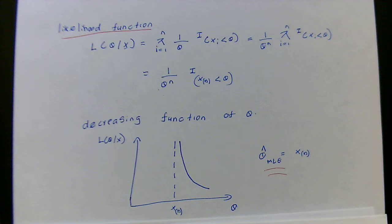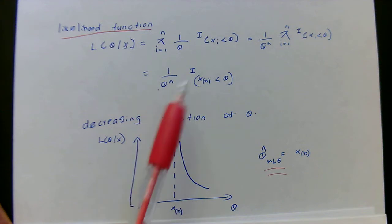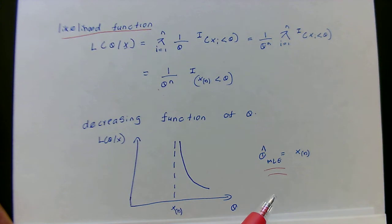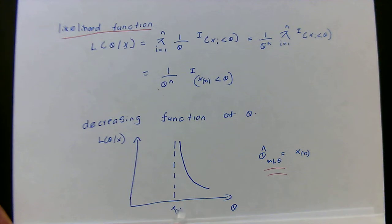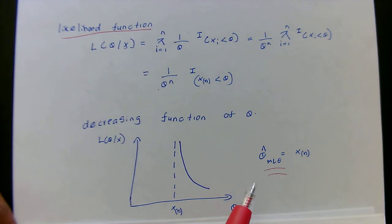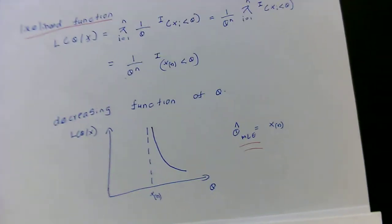If you draw this likelihood function, you can see it is a decreasing function — when theta increases, the likelihood decreases. Therefore the maximum of the likelihood function is obtained when theta equals the largest order statistic. So the largest order statistic X_(n) is our MLE of theta. But our question is to find the MLE of theta squared.